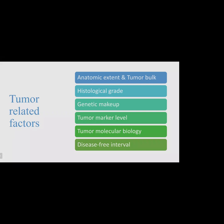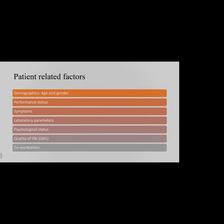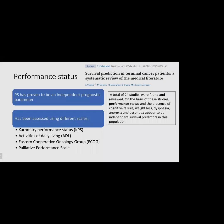Patient-related factors include demographics such as age and gender, performance status, symptoms, laboratory parameters, psychological status, quality of life, and comorbidities. Patients with comorbidities have poorer prognosis due to greater likelihood of complications and decreased ability to tolerate treatment. Performance status has proven to be an independent prognostic parameter, measured using scales such as Karnofsky performance status, activities of daily living, Eastern Cooperative Oncology Group (ECOG), and palliative performance scale. A systematic review of 24 studies found that performance status, along with symptoms such as cognitive failure, weight loss, dysphagia, anorexia, and dyspnea, were independent survival predictors in terminal cancer patients.